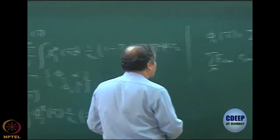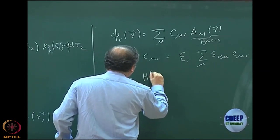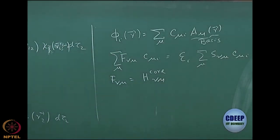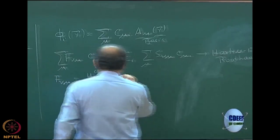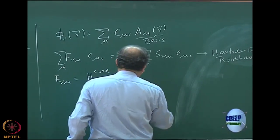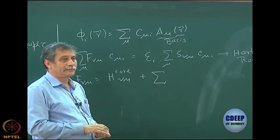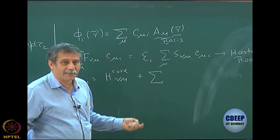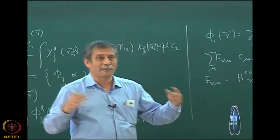Then we gave an expression for F_mu-nu in terms of matrix elements of h, which we call h-core_mu-nu — the matrix element of h in the basis of A_nu and A_mu. So: h-core_mu-nu plus additional terms. There are several expressions you can write in terms of coefficients and the density matrix, and you should be able to derive one from the other.